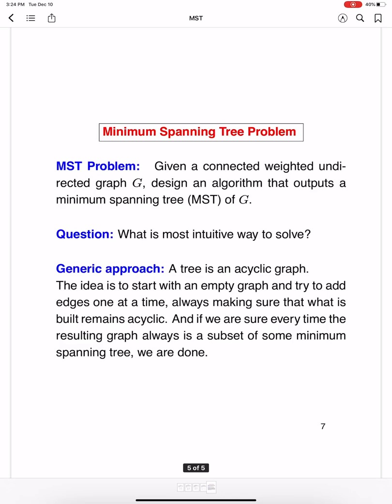So the minimum spanning tree or MST problem can be stated as follows. Now, you are given a connected weighted undirected graph G. And the goal is to design an algorithm that outputs a minimum spanning tree or MST of G. Now, how do we go about solving this?